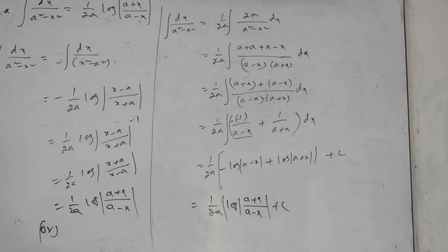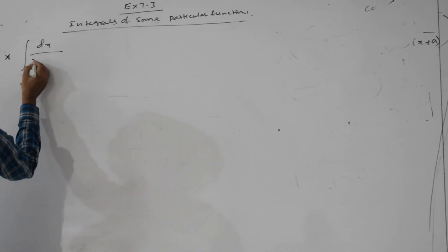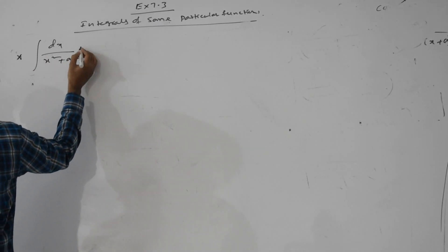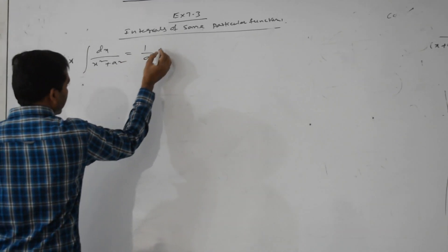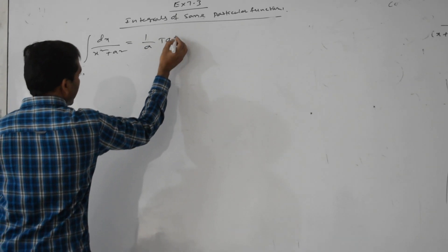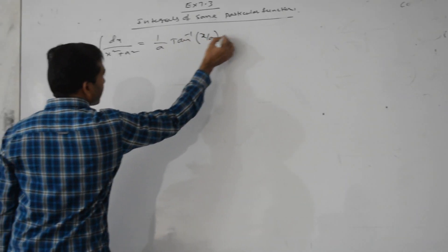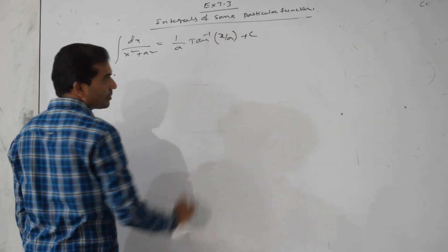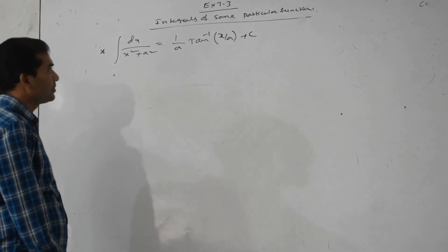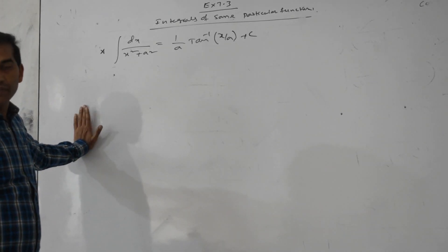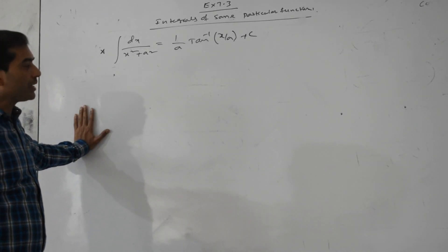Next: integration of dx by (x² plus a²) dx equals 1 by a times tan inverse of x by a plus c.